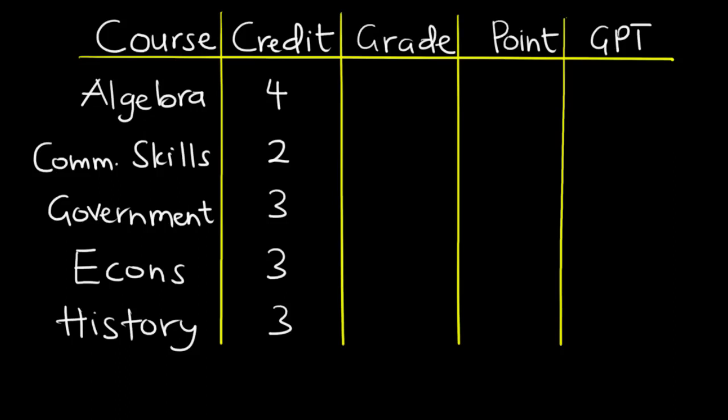So let's say you read five courses this semester and these are the credits for each course. Let's say algebra is a four-credit hour course, comm skills is a two-credit course, government is a three-credit course, economics is a three-credit hour course, and then history is also a three-credit hour course.